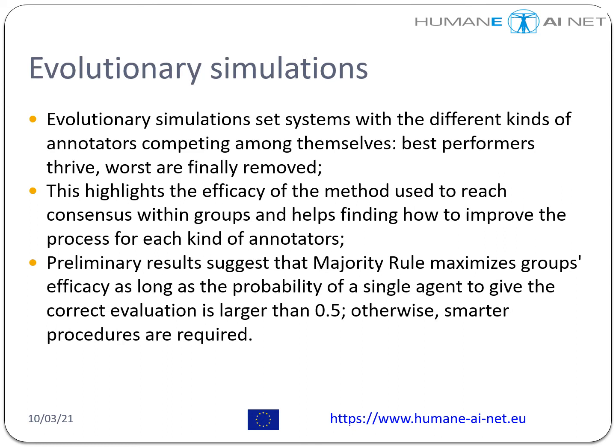Evolutionary simulations set up systems with different kinds of annotators competing among themselves. Best performers thrive, while the worst are finally removed. This highlights the efficacy of the method used to reach consensus within groups and helps find how to improve the process for each kind of annotator. Preliminary results suggest that majority rule maximizes group efficacy as long as the probability for a single agent to give the correct evaluation is larger than chance — otherwise, smarter procedures are required.